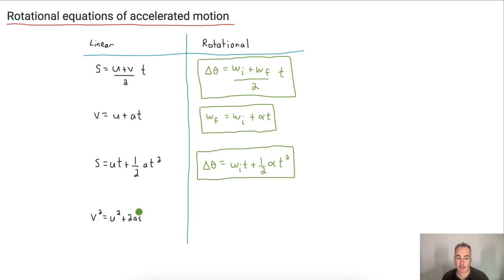All right, v squared equals u squared plus two a s. Well, v, remember, is omega f, so we have omega f squared equals omega i squared, the initial angular velocity here. So you have a final angular velocity squared equals the initial angular velocity squared plus two - and remember what a is, a is alpha, and s is delta theta. So here are your equations of motion, all four of them. We've got them right here.